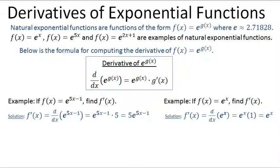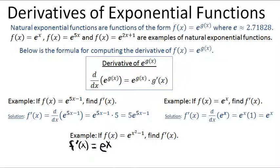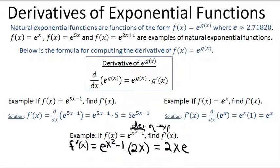Let's try one more example. Suppose f of x equals e to the x squared minus 1. Applying the same idea, f prime of x equals e to the x squared minus 1, multiplied by the derivative of the exponent x squared minus 1, which is 2x. So f prime of x equals 2x e to the x squared minus 1. These three examples illustrate the use of this particular derivative formula.